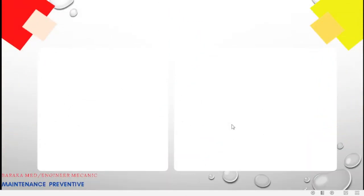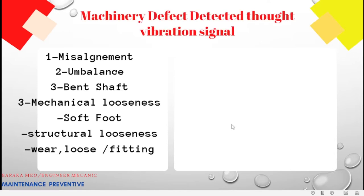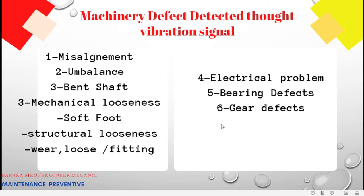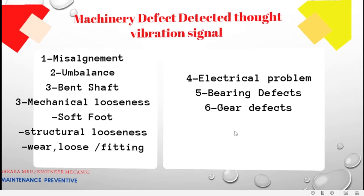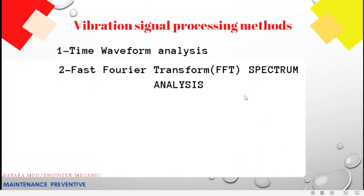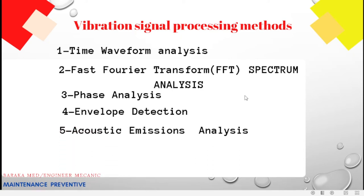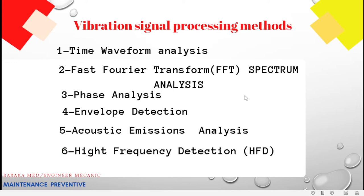So how can we detect problems with vibration analysis? Machine defects detected through vibration signals include alignment issues, imbalance, bent shaft, and mechanical looseness — including soft foot and structural looseness. Electrical problems such as rotor-stator inequality, bearing defects, and gear defects can also be identified.